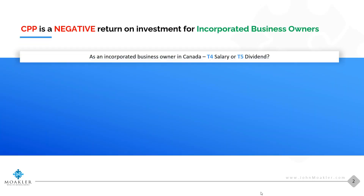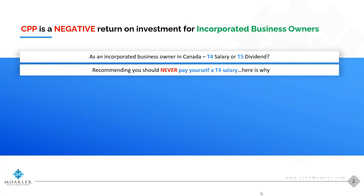As a business owner, you have a choice as to how you pay yourself — a T4 salary, a T5 dividend, or a combination of both. What we're recommending is that you should never pay yourself a T4 salary. Here's why: if you pay yourself at least $60,000 or more of a T4 salary each year, you're paying double into the Canada Pension Plan — both the employee and the employer portion.